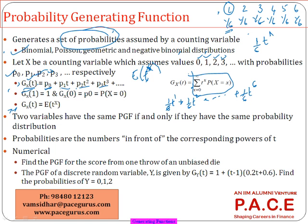Going back to our definition of expected value from Chapter 3, the expected value of t^x means: t^1 multiplied by probability of 1, t^2 multiplied by probability of 2, and so on. From this, an important result is that g(1) — putting t equal to 1 — gives p0 + p1 + p2 + ... which is the sum of all probabilities, equal to 1. So g(1) = 1.